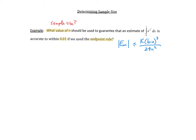The first thing we need to do is find k. In order to find k, we need to bound our second derivative. So k should be the bound of the second derivative of f of x, and we're bounding it on the closed interval [0, 1]. I know that's the interval because that's our region of integration for our definite integral, 0 to 1.